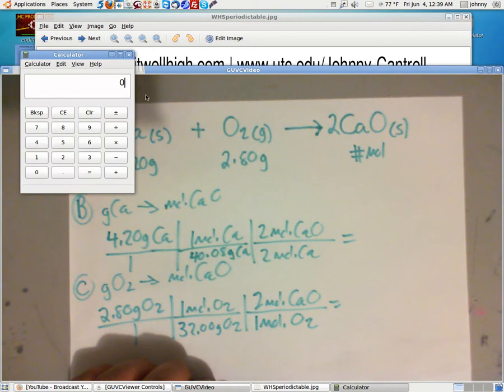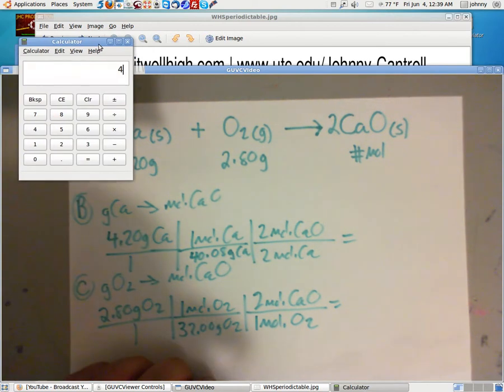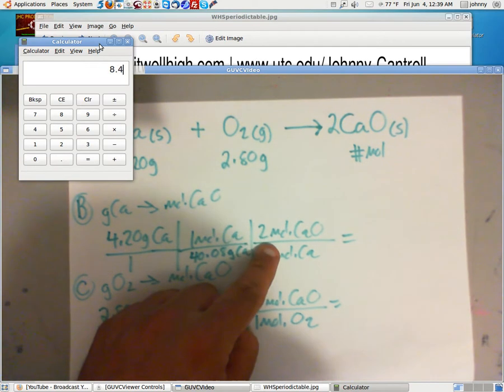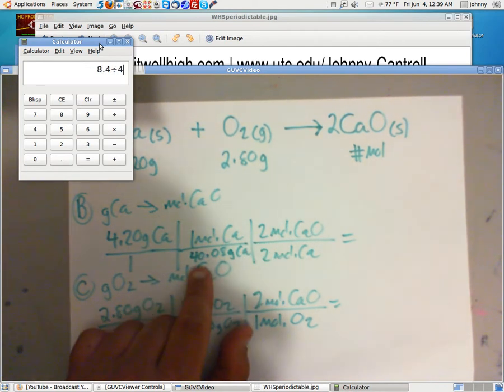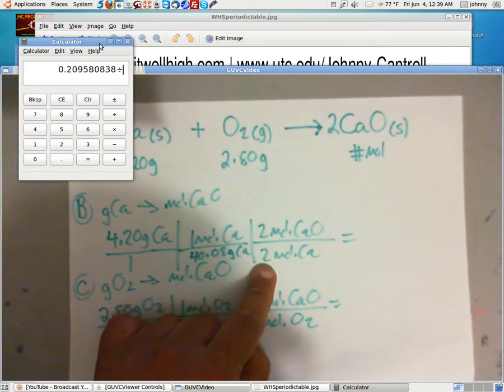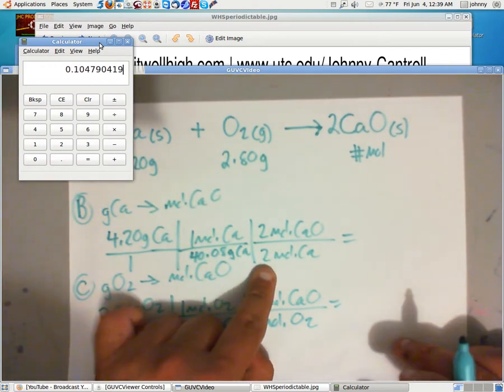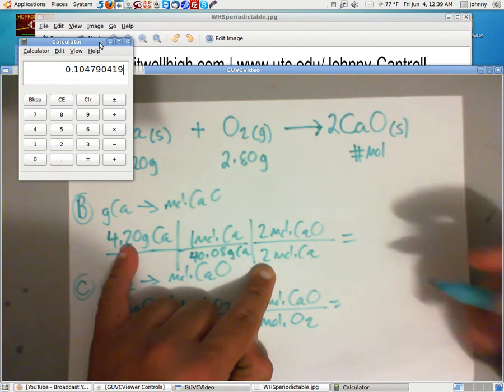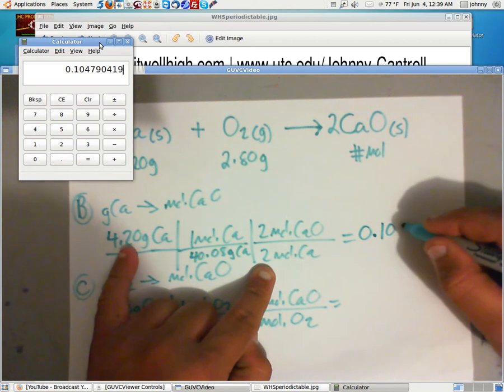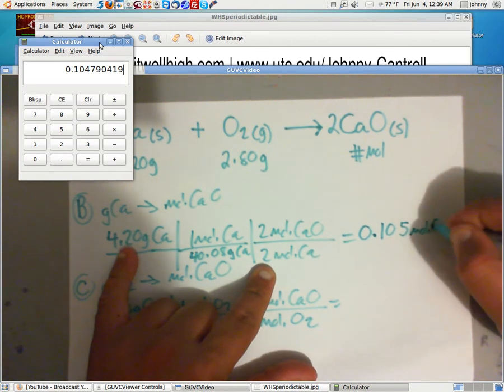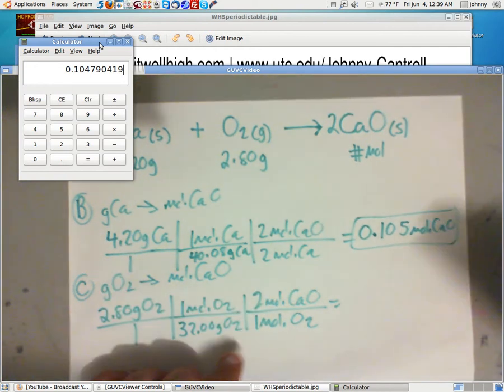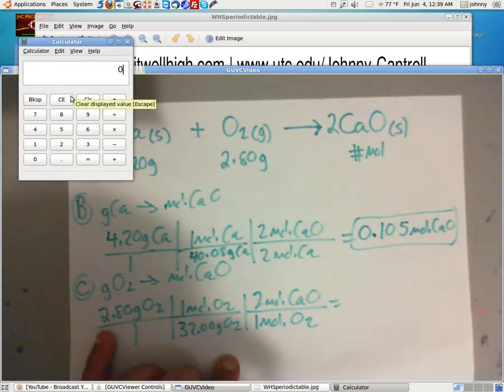Now, let's punch these in the handy-dandy calculator. Let's see. We've got 4.20 times 1 times 2 divided by 40.08. And, oh, and I've got to divide by 2 again. So that gives me, now I've got to keep 3 sig figs because I had 3 sig figs in the beginning. So that's 0.105. And that's moles of CaO. So we're done with that one. B is done.